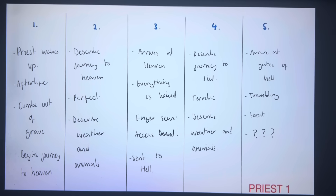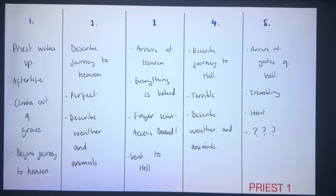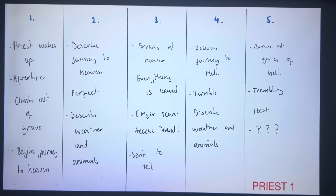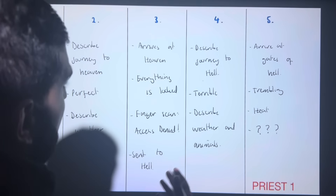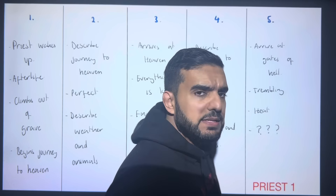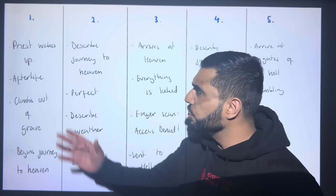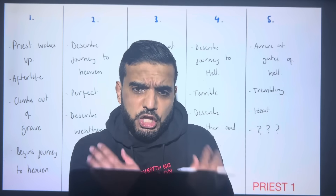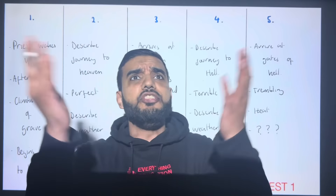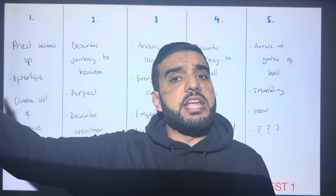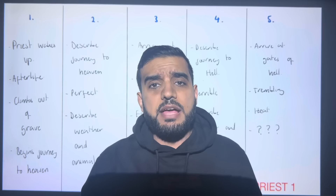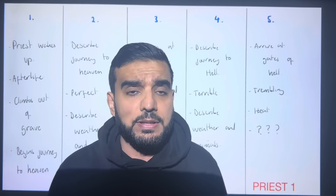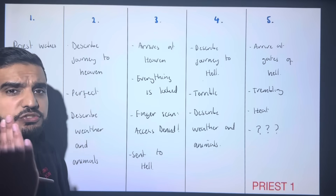I'm now going to give you eight different plots that you can use for every single question in your GCSE exam. Plot number one is called 'Where This Journey Began.' This is the first priest story. In paragraph one, you are a priest and you wake up in the afterlife. You climb out of your grave, you dust your suit down, and you look for the sign pointing to heaven because you believe that's where you belong, so you begin your journey.